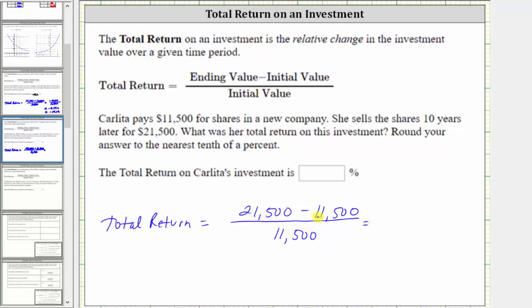21,500 minus 11,500 is 10,000. So we have 10,000 divided by 11,500. And now we go back to the calculator.